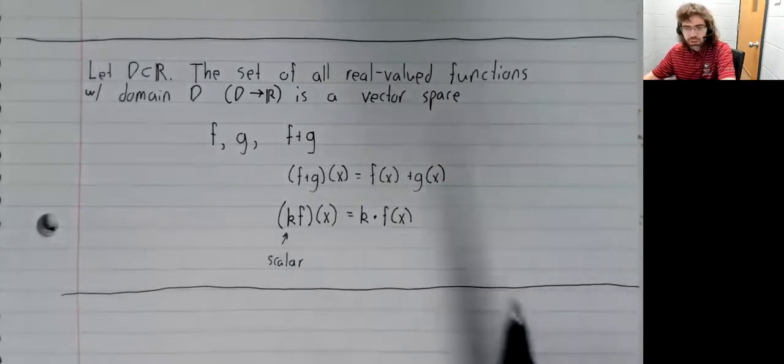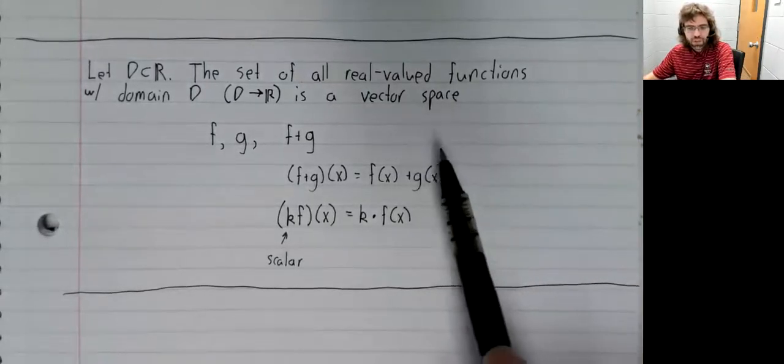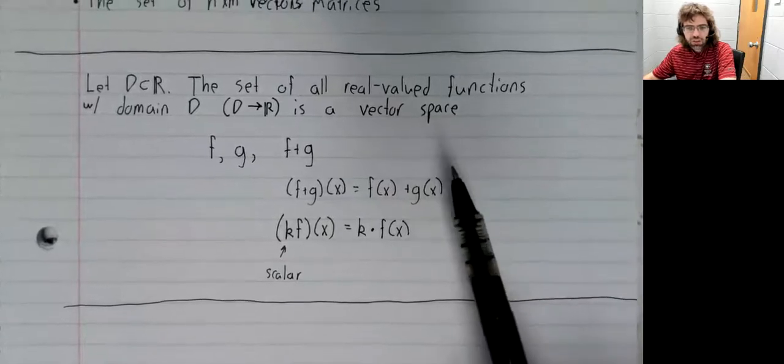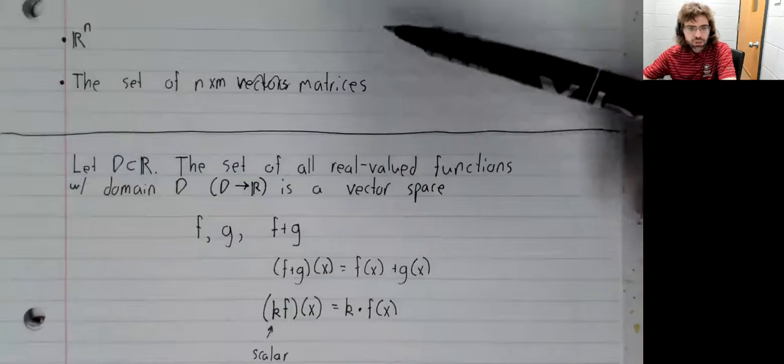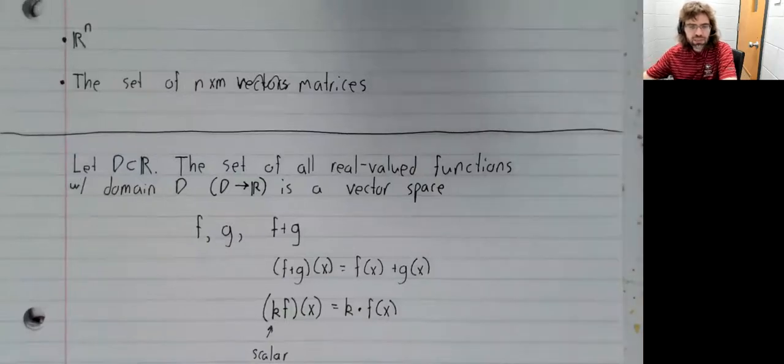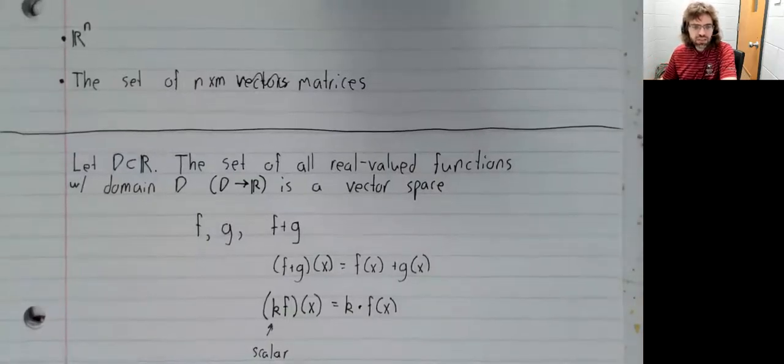So here's an example of a vector space that looks very different from the two vector spaces we've already seen.